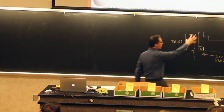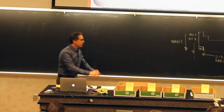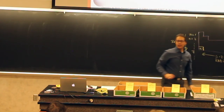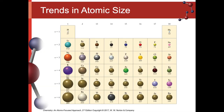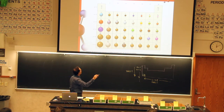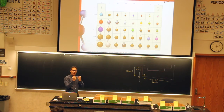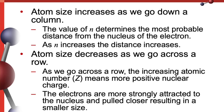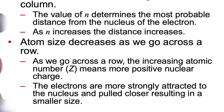So the size gets bigger as we go down the periodic table, as we have increasing values of n. Then as we go across the periodic table from left to right, it gets smaller. Why does it get smaller as we go left to right? As we go across, we're in the same energy level — the same shell where the electrons are — but we increase the number of protons. It's like the same orbit but with a bigger sun. As we go across, more protons pull those electrons in, and the atoms get smaller.